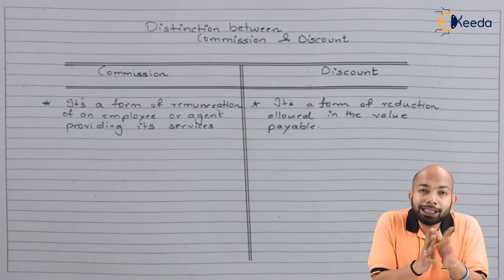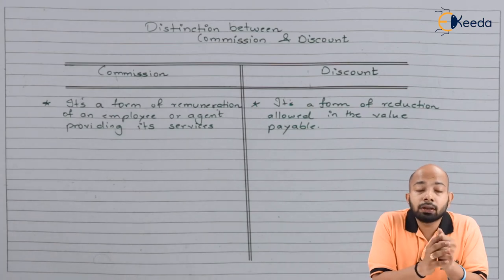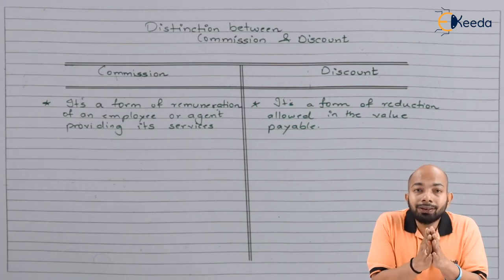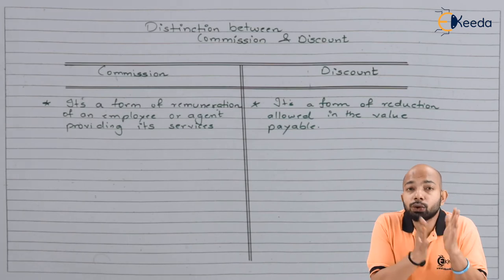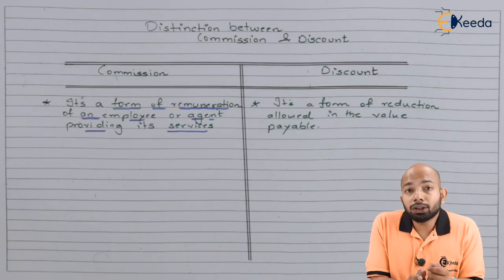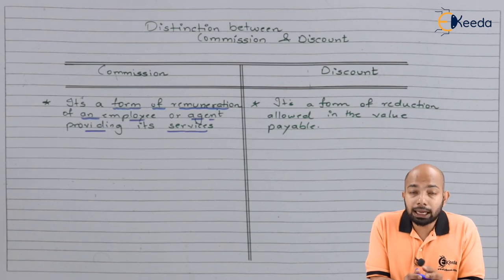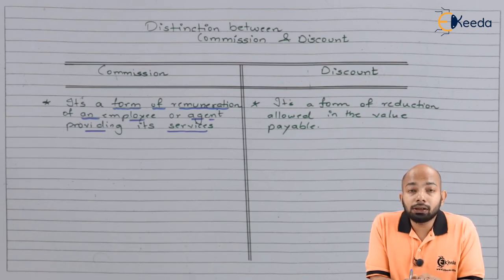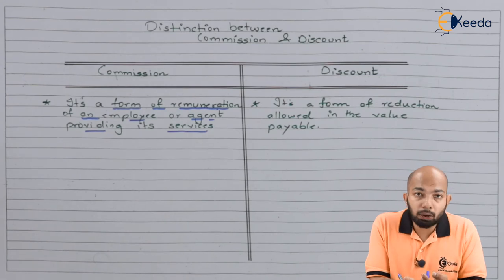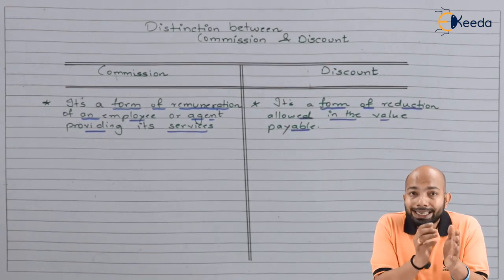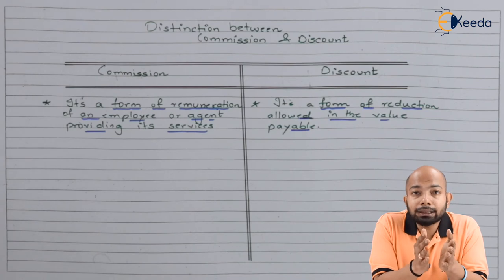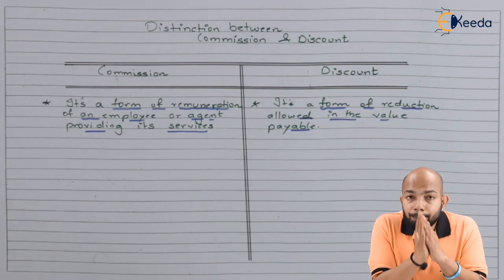The first point of discussion between commission and discount: commission is the kind of remuneration that is provided either to the employee or to the agent who is providing his services. On the other hand, discount is the kind of reduction that is allowed on the amount that is payable by some other party to us.